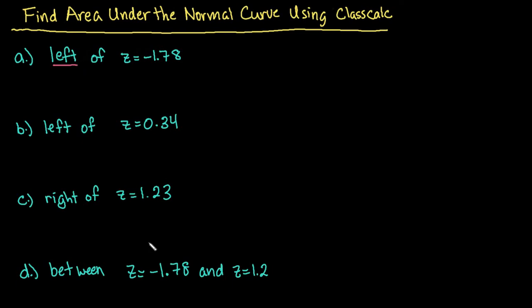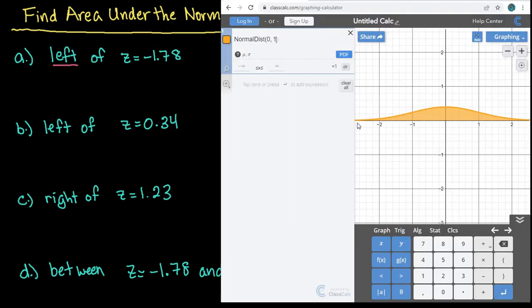So since it says left of z equals negative 1.78, what we want to do is we want to go from negative infinity and we want to stop at negative 1.78.